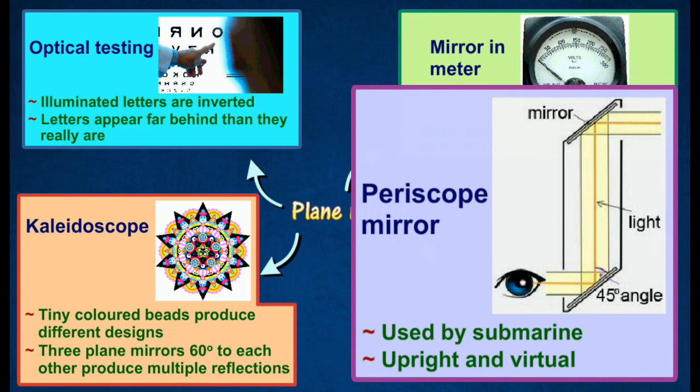The periscope is used by submarines to view objects above the surface of the sea. The image observed is upright and virtual.